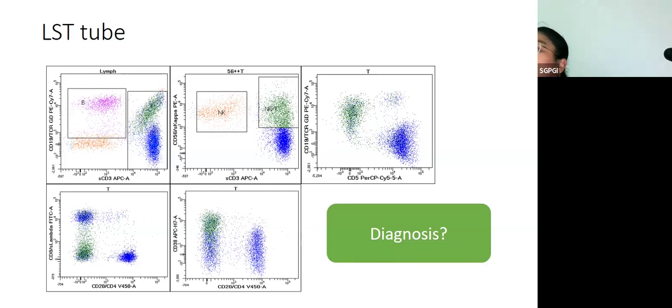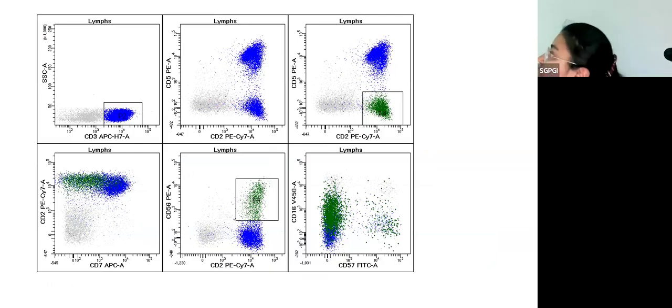Gamma delta proliferation or gamma delta lymphomas, if we think on top of our head would be hepatosplenic T-cell lymphoma, subcutaneous panniculitis T-cell lymphoma, which this presentation would not justify, and there is the cutaneous gamma delta proliferation. Very likely with the presence of this splenomegaly, with this pattern you are dealing with hepatosplenic T-cell lymphoma. We realize that there is this population that is CD5 negative, CD2 positive. They are also showing a down regulation of CD7. These cells are CD56 positive. When you look at CD16 and CD57, CD57 is nearly absent in majority, while CD16 is expressed at a dim intensity.